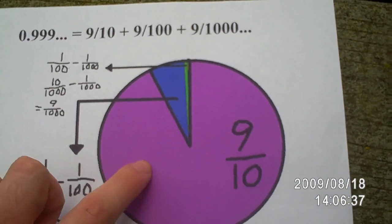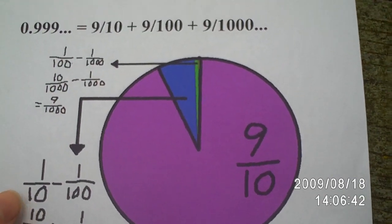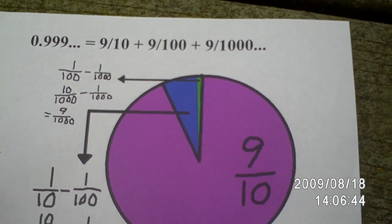And that's rock-solid proof that 0.9 repeating is equal to 1.